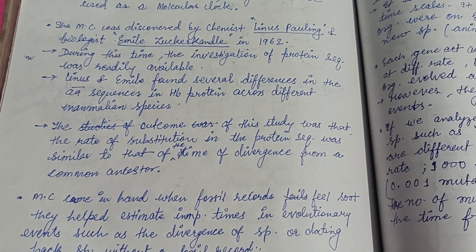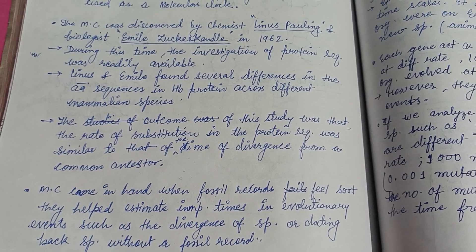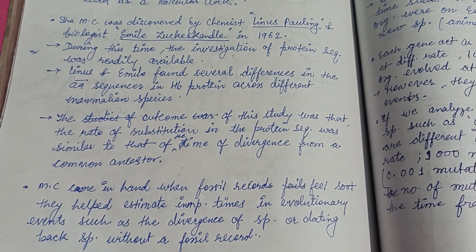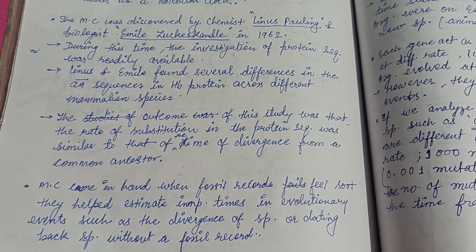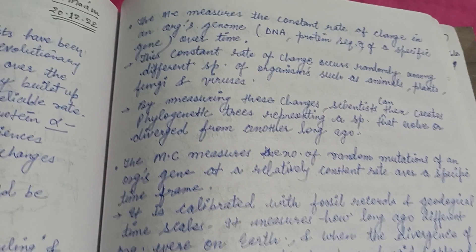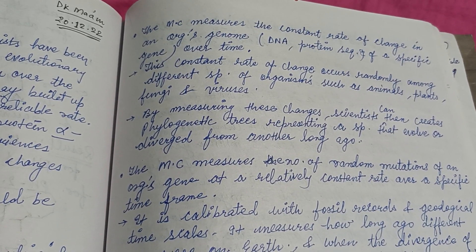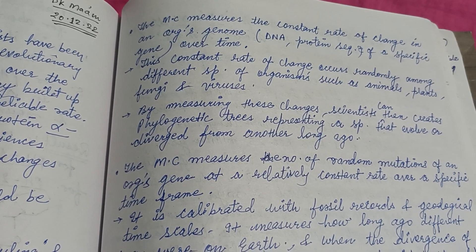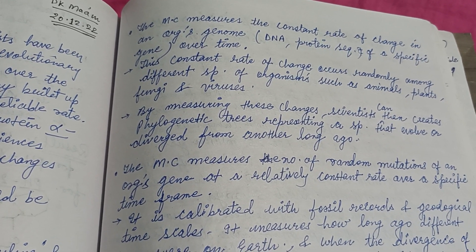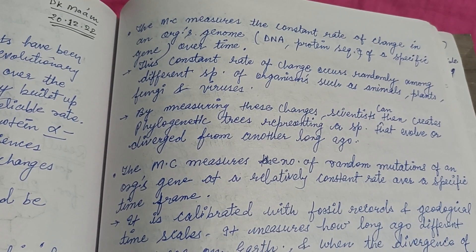Molecular clocks come in handy when the fossil record falls short — they help estimate important times in evolutionary events, such as the divergence of species or dating species without a fossil record. Basically, a molecular clock is a change in the DNA, RNA, or protein sequences over a certain period of time, or a constant rate of change in an organism's genome.